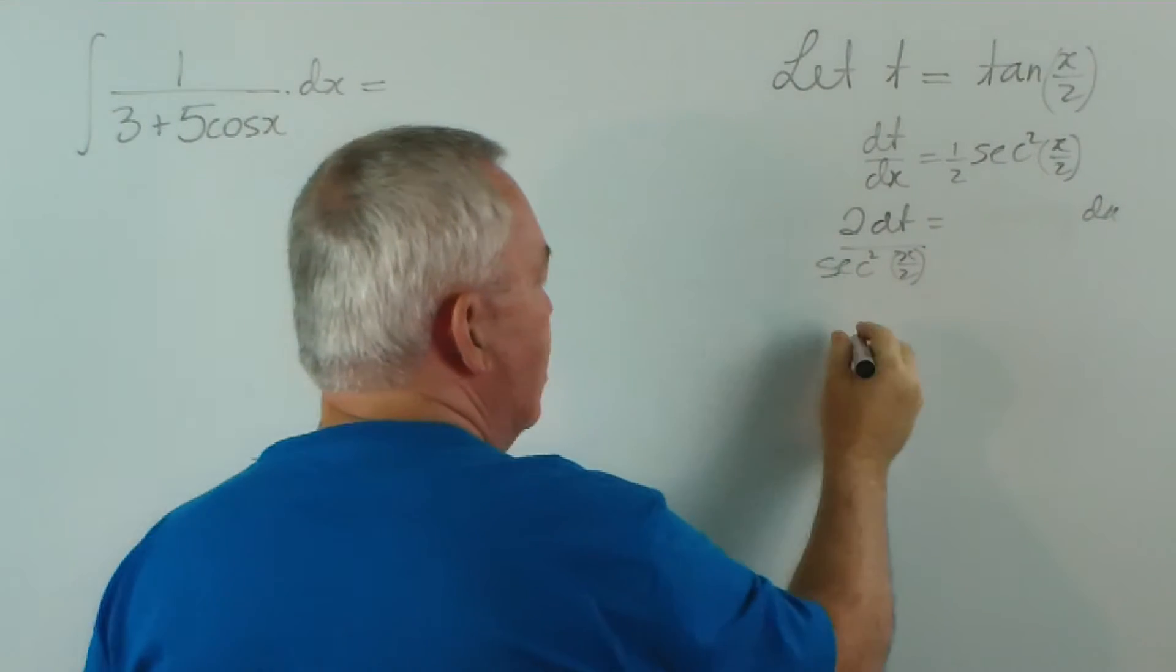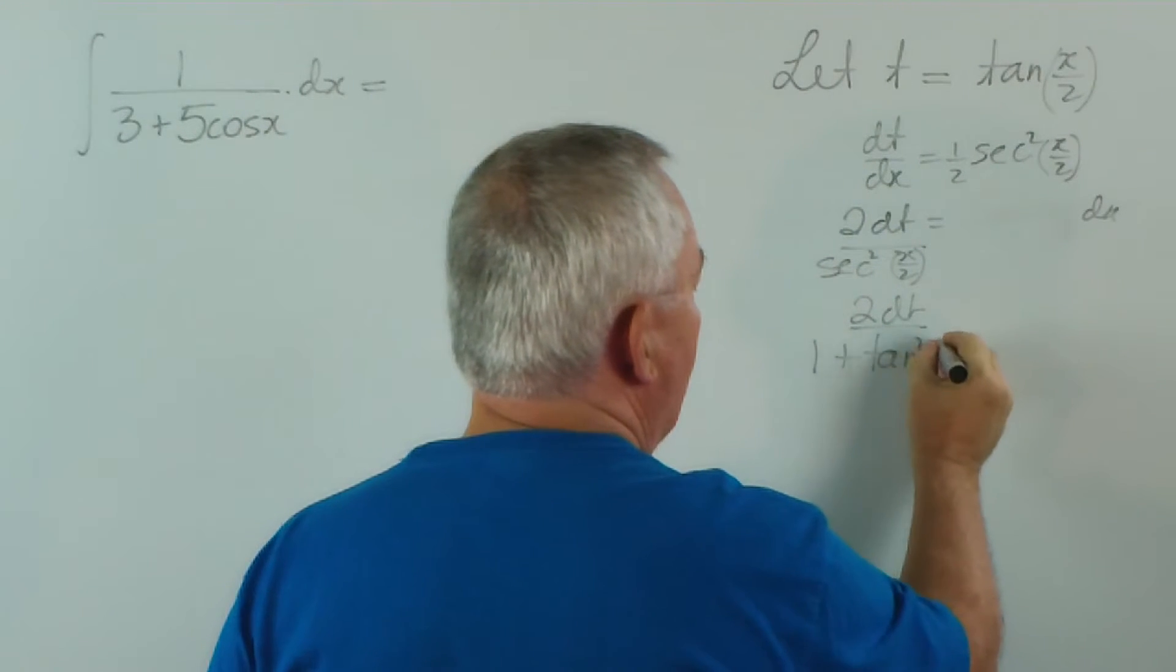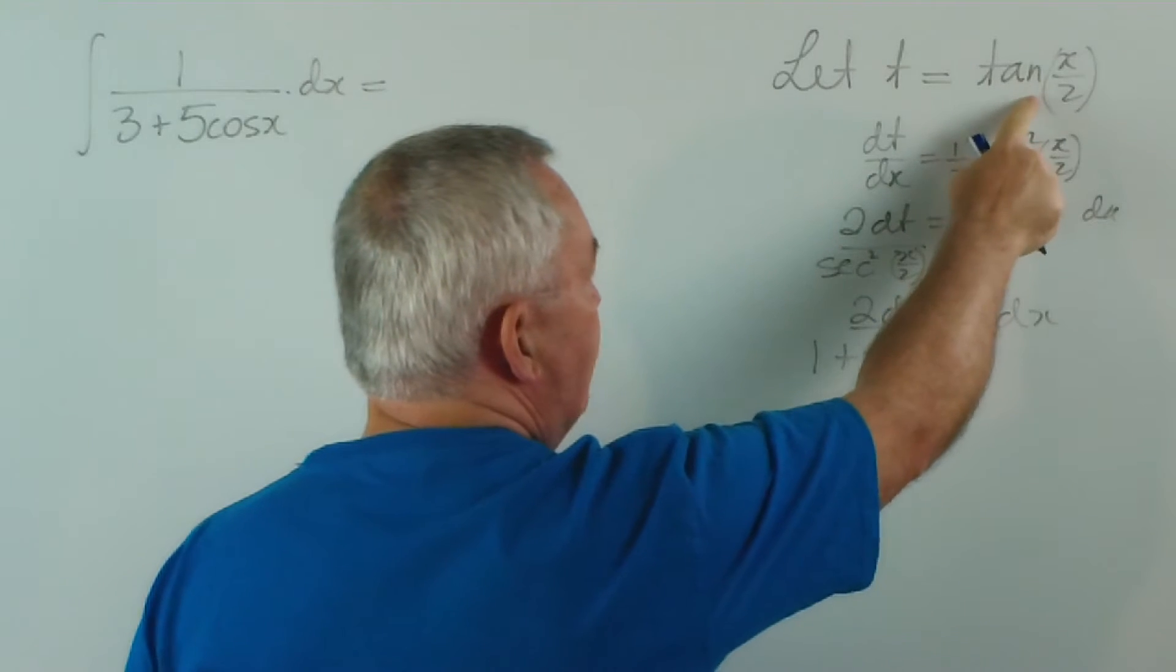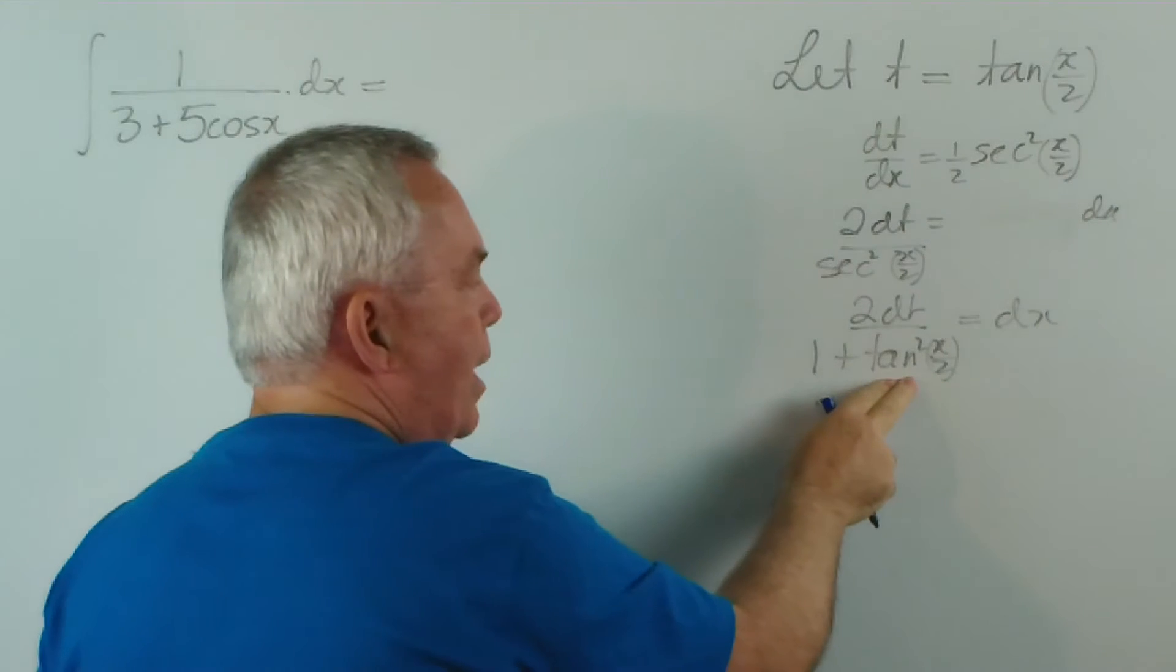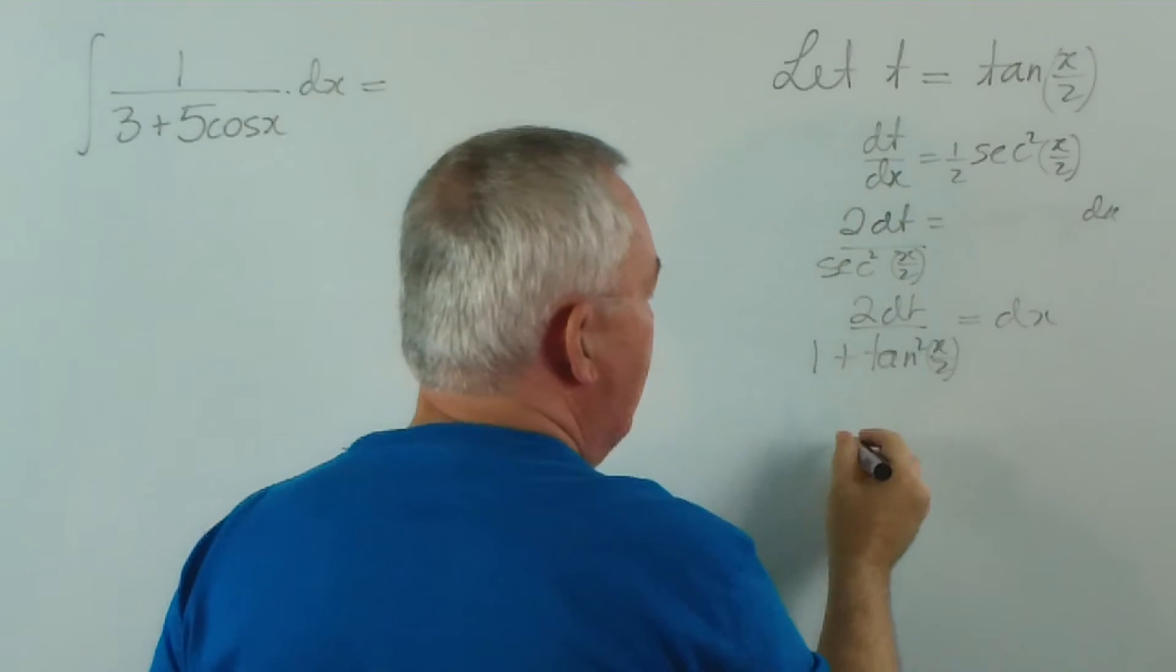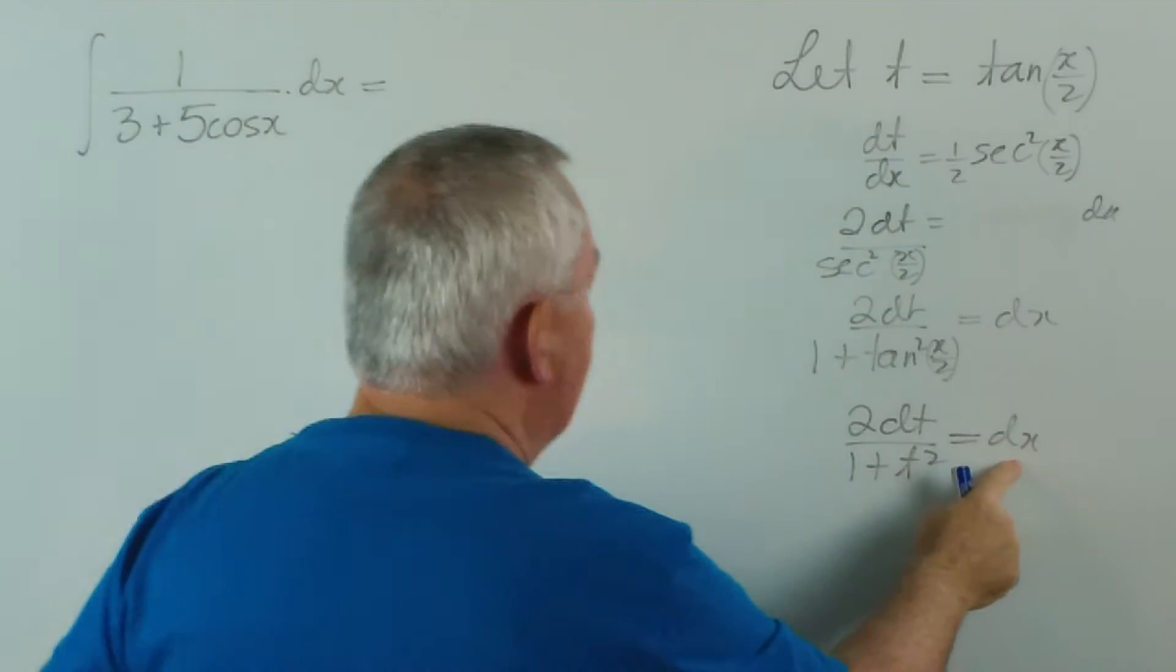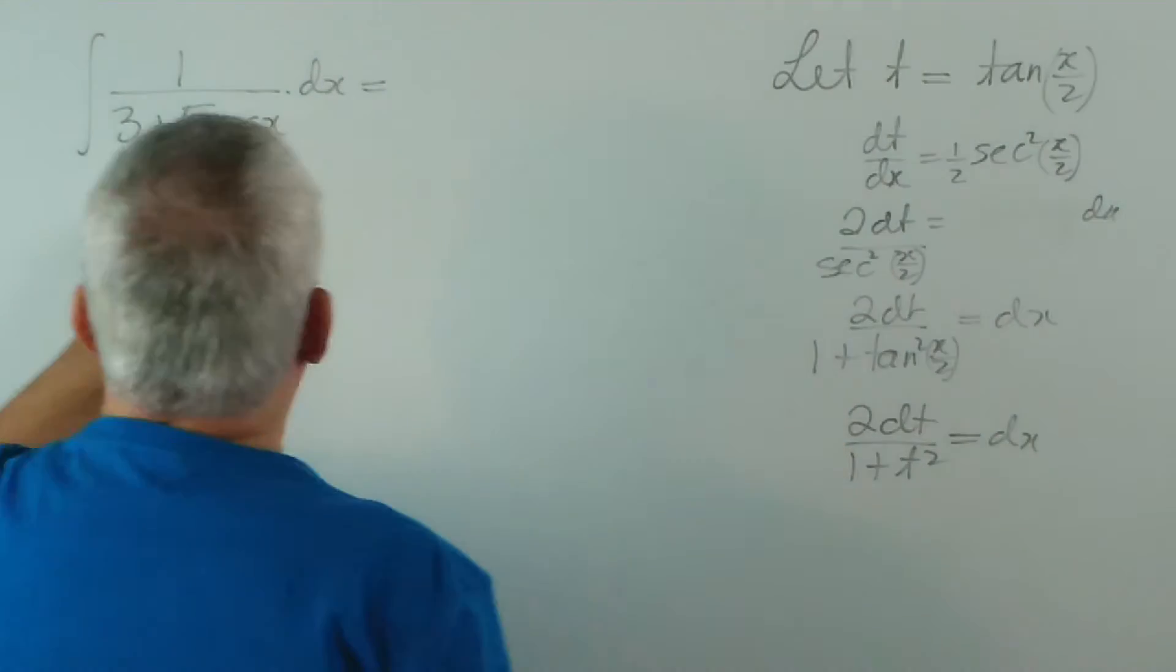And c squared is 1 plus tan squared x on 2. We've managed to rearrange the equation and get our expression back in terms of the tangent of x on 2. We can replace tan x on 2 with t. So this will be 2 dt on 1 plus t squared. That's what we're going to replace the dx by.